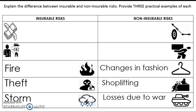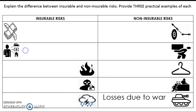The money with a wing icon tells us about financial loss and the compensating that companies do. Something is non-insurable when the loss is too big and people cannot accurately calculate how much they have to pay back, and it becomes the responsibility of the business. Practical examples shown: fire, theft, storm for insurable risk; fashion trend changes, shoplifting, and losses due to war for non-insurable risk.